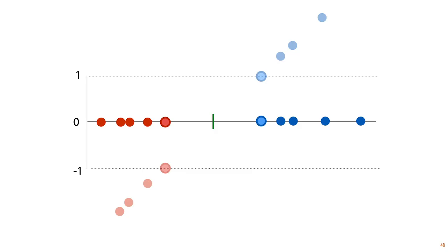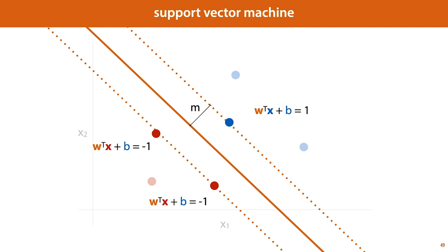The hyperplane we will try to choose is the one that produces 1 for the positive support vectors and minus 1 for the negative support vectors. This means that for all other negative points, this hyperplane should produce values below minus 1, and for all other positive points, values above 1. The linear function evaluates to zero on the decision boundary, and it evaluates to minus 1 on the dotted line where it hits the negative support vectors. We define the margin as the distance from the decision boundary where the hyperplane evaluates to zero, to the lines where it evaluates to plus one and minus one.